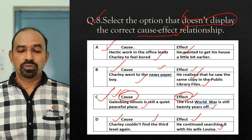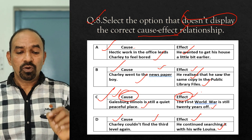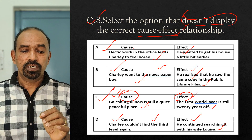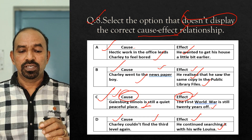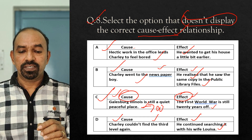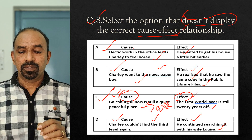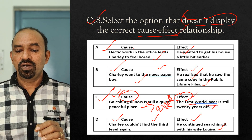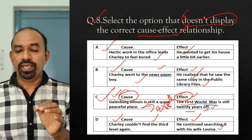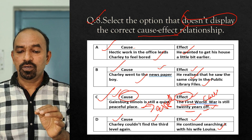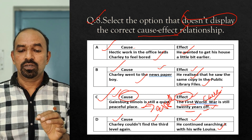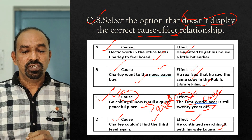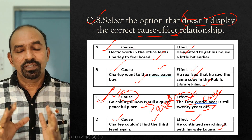C is the right option because Galesburg-Illinois being a quiet, peaceful place is the effect, not the cause. The cause is that the First World War is still 20 years away — so the cause and effect are reversed in option C. C does not display the correct cause-effect relationship.